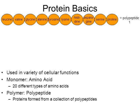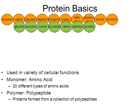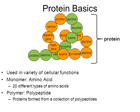Proteins are going to be formed from a collection of polypeptides. Here in green is another polypeptide made from 7 amino acids. These two polypeptides will bond together, and then they're going to twist and fold themselves into a very specific shape. Only then do we call that overall molecule a protein.